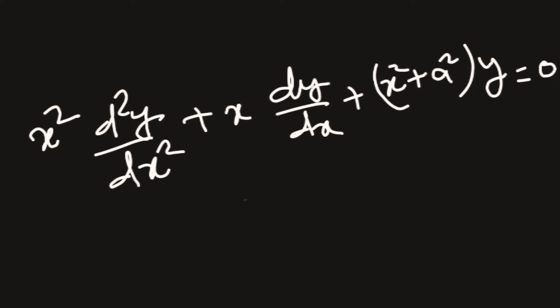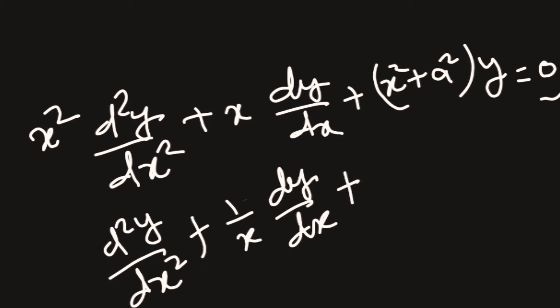Here is the Bessel equation: x square d square y by dx square plus x dy by dx plus x square plus a square y is equal to 0. Clearly if we divide throughout by x square we can get d square y by dx square plus 1 by x dy by dx plus 1 plus a square divided by x square whole multiplied by y is equal to 0.